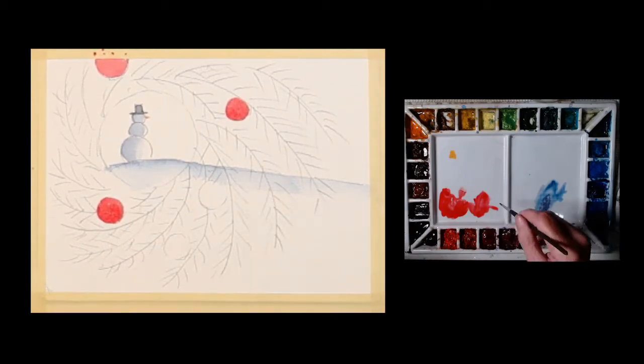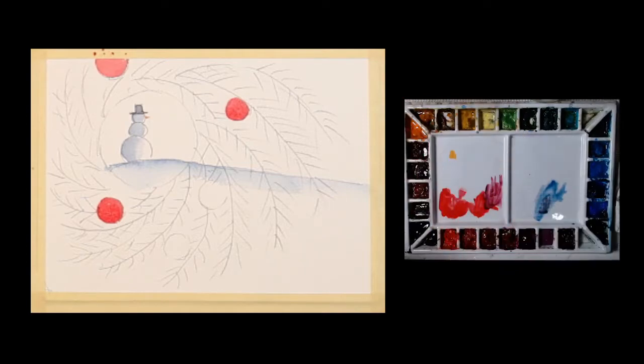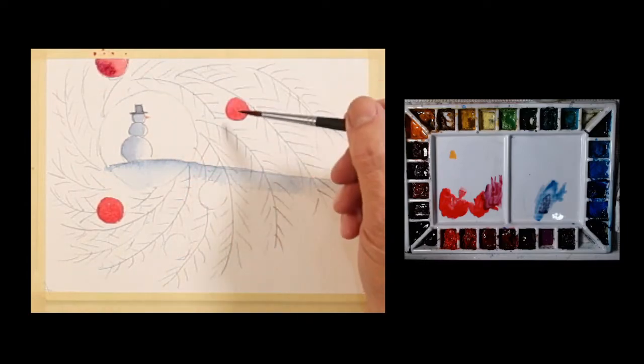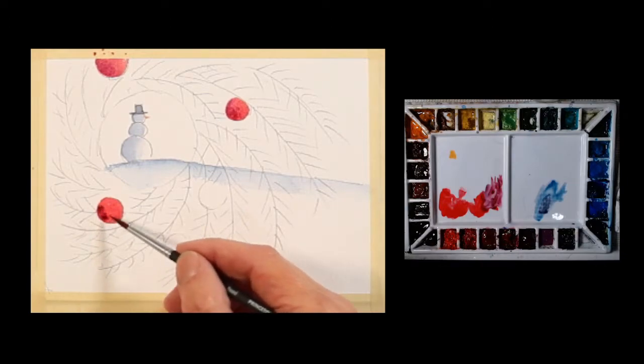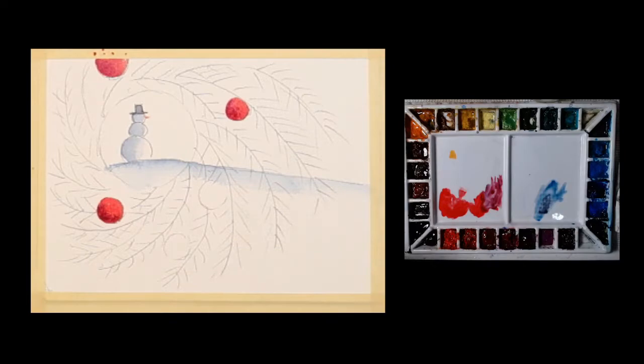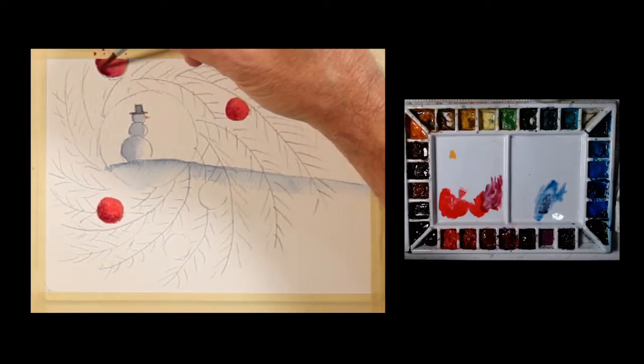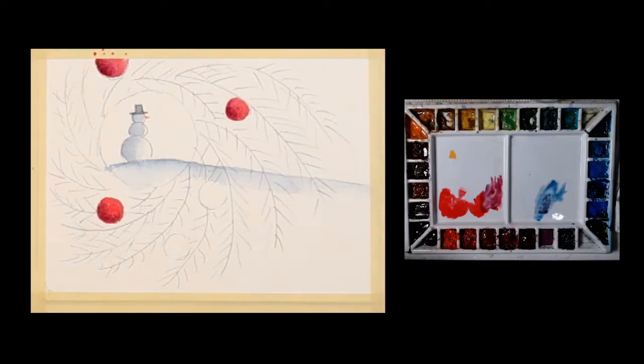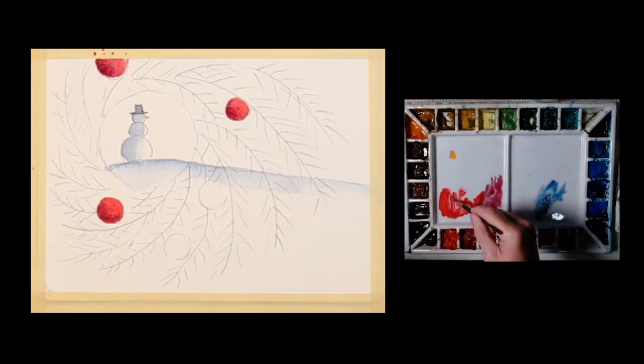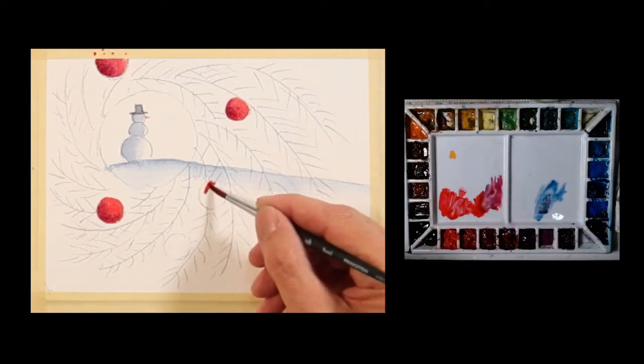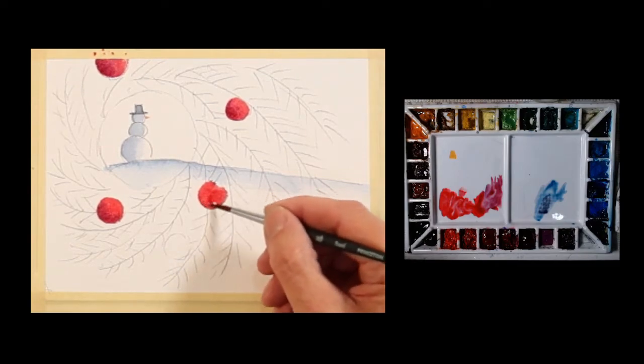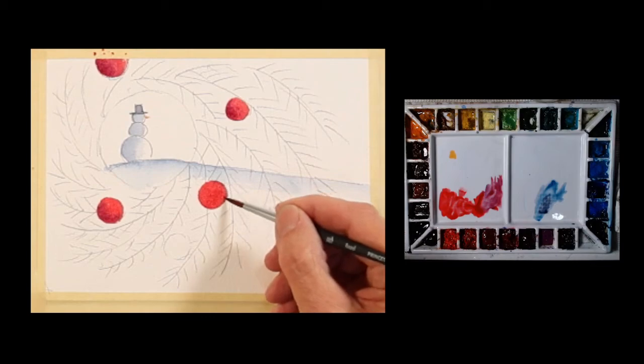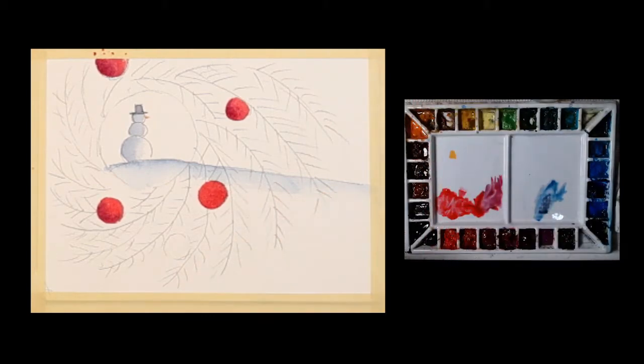Before the other ones get too dry, I'm grabbing some Alizarin Crimson and I'm just going to touch this. I want to get it while it's wet so that it gets a soft gradation into that. I'm not brushing, I'm just touching that a little bit to let some of that color get in there, and because it's wet it'll just diffuse into the wash that I've already put down.